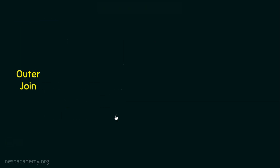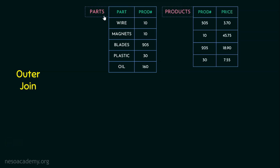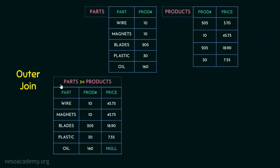I am going to explain all three types of outer join: the left outer join, the right outer join, and the full outer join. For performing the outer join, I am bringing two relations. This is the first relation — the parts relation — and here is the second relation, which is the products relation. In the parts relation, we have two columns: the name of the part and the product number. In the products relation, we have product number as well as price. The common attribute that exists in both relations is the product number. There are five items in the parts relation and four items in the products relation.